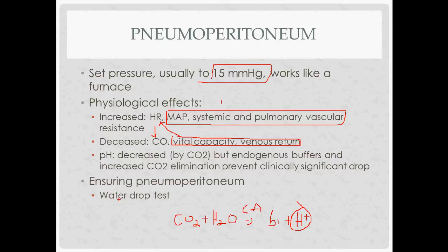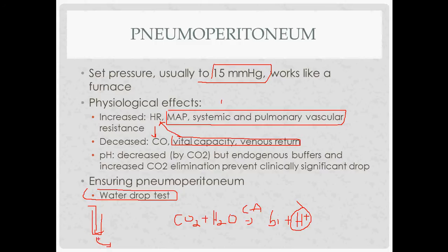To confirm you're inside the peritoneum — especially when using the Veress needle without direct visualization — you can perform a water drop test: drop water into the hole made in the peritoneum. If it freely flows in, you're likely in the peritoneum. You can also inject saline and try to aspirate it back; if it comes back out, you're probably not in the right place, since it should freely move into the abdomen if you're inside the peritoneum.